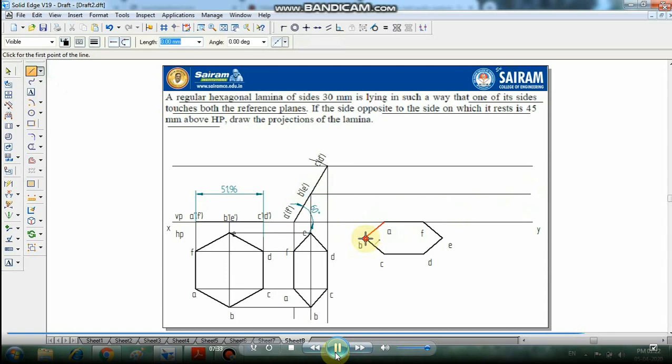From here we are drawing the projection lines: C, A, D, F, and E touches where E dash. Mention the name. A dash where it touches, B to B dash, C to C dash, D to D dash, E dash here, and F dash, D dash.